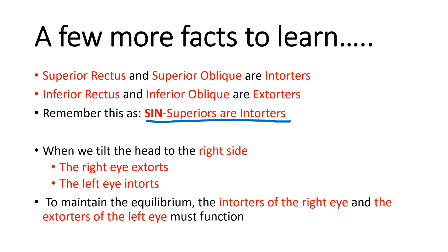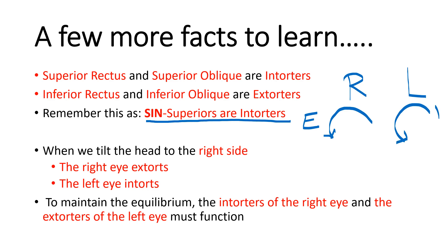Now we will try to see what happens when we tilt the head to one side, either to the left or to the right. When we tilt the head to the right side, the right eye extorts and the left eye intorts — not because of the eye muscles but because of the tilting of the head. So to maintain equilibrium, the intorters of the right eye need to function, and likewise the extorters of the left eye need to function. On a right-sided head tilt, both the intorters of the right eye and the extorters of the left eye must work.